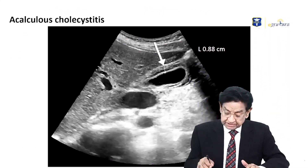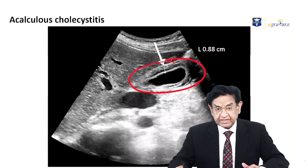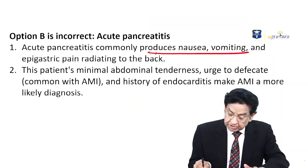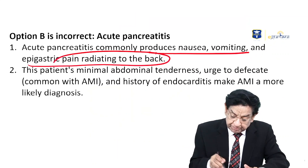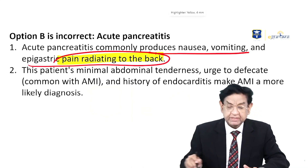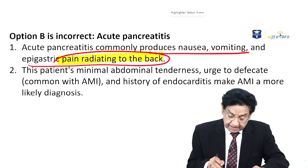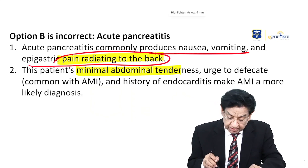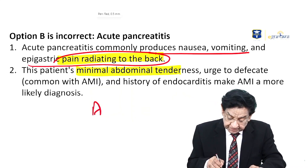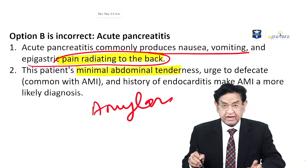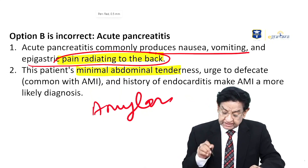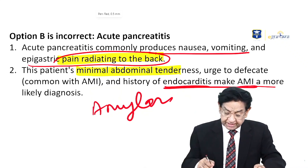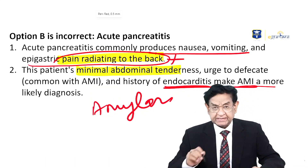Acute pancreatitis commonly produces nausea, vomiting, and epigastric pain that radiates to the back — that is a very important clue differentiating it. There is also minimal abdominal tenderness and raised amylase, similar to AMI. However, in our case, the history of endocarditis, abrupt onset, and peri-umbilical pain not radiating to the back makes acute pancreatitis unlikely.